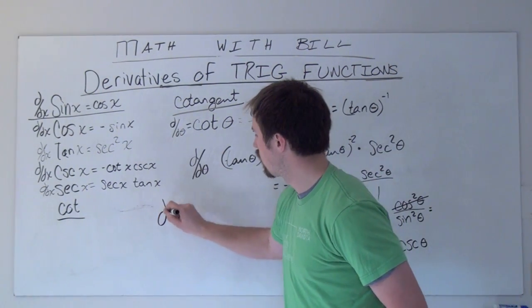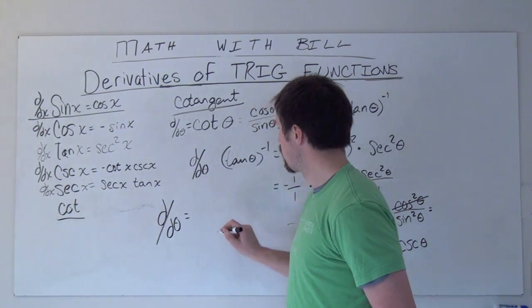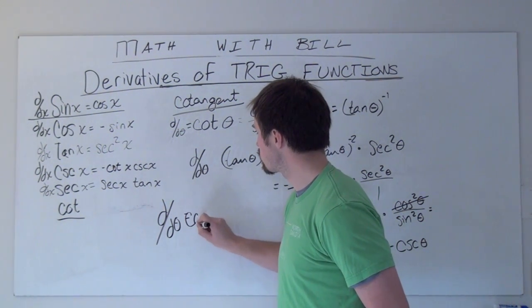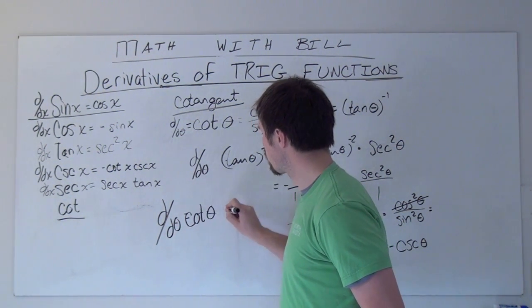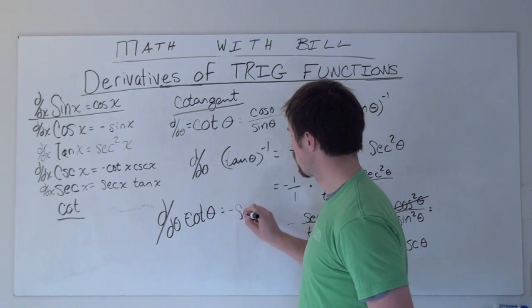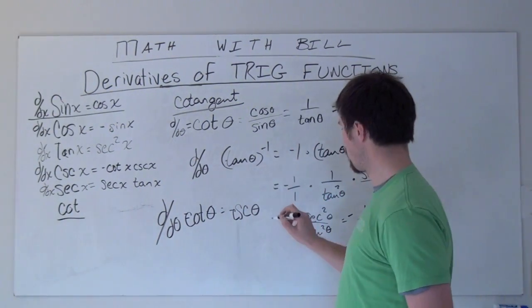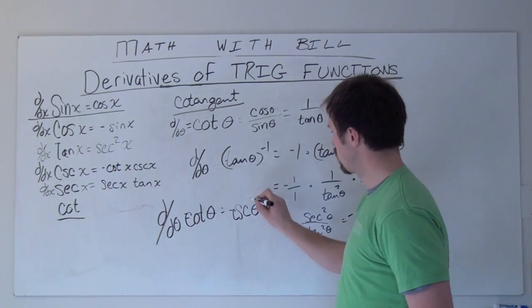So, in short, our derivative with respect to theta of cotangent theta is equal to negative cosecant theta squared.